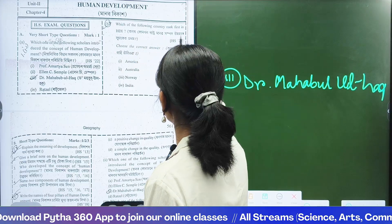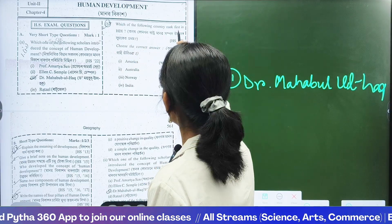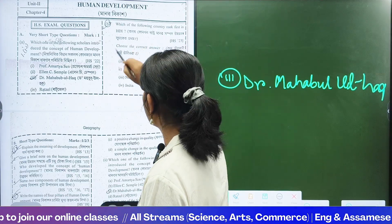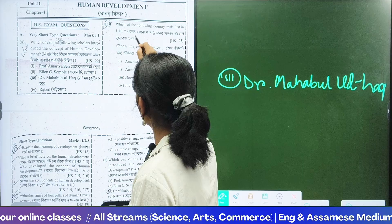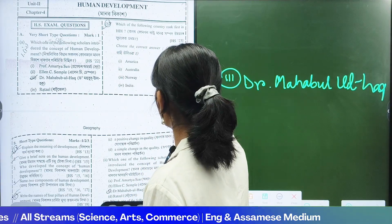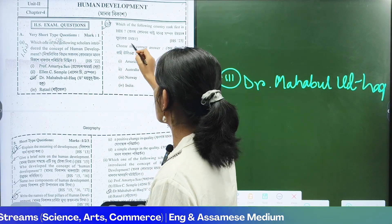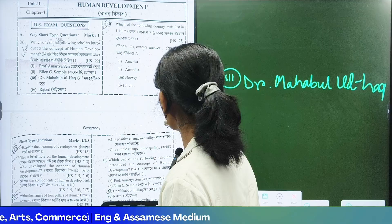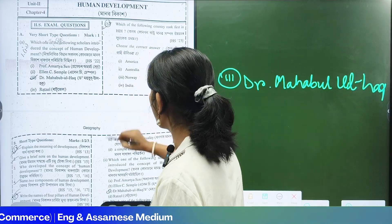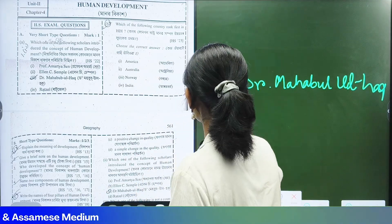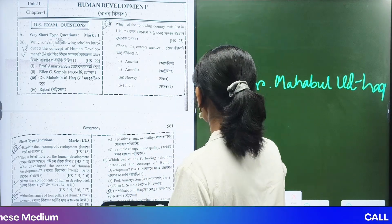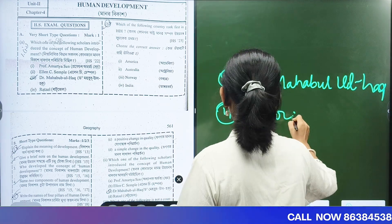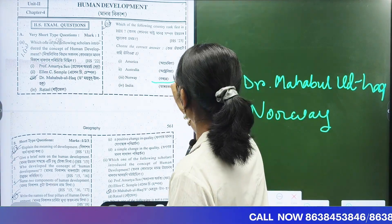Which one of the following countries ranked first in 2020 in the HDI — Human Development Index? The answer is Norway. Norway is the answer.